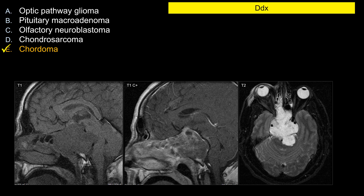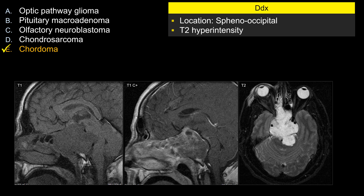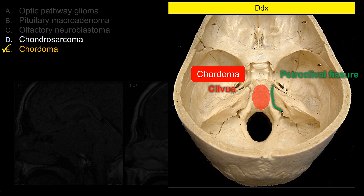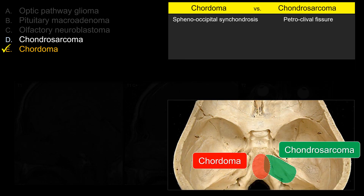The differential diagnosis in the sphenooccipital region — the central skull base with T2 hyperintensity — basically comes down to two things: chordoma versus chondrosarcoma. Both occur in around the same location and are relatively bright on T2-weighted sequence. The clivus is in the midline, while the petroclival fissure is off midline. Chordoma, derived from notochordal remnants within the sphenooccipital synchondrosis, tends to be midline. Chondrosarcoma is derived from the petroclival fissure, so it tends to be eccentric. For board exam purposes: chordoma is a midline lesion and chondrosarcoma is off midline.